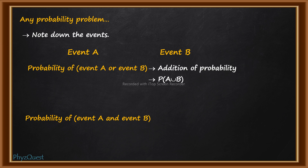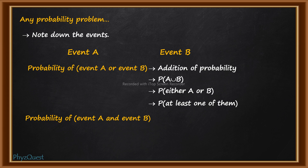This 'or' statement can be written in various phrases. It can be mentioned as 'probability of either A or B,' or also as 'probability of at least one of them.' All these phrases mean the same thing — here you have to do the addition of probability.